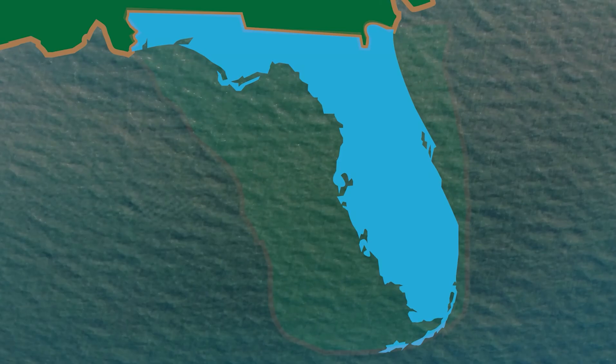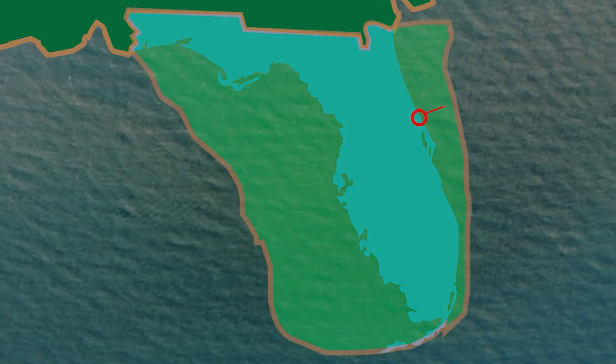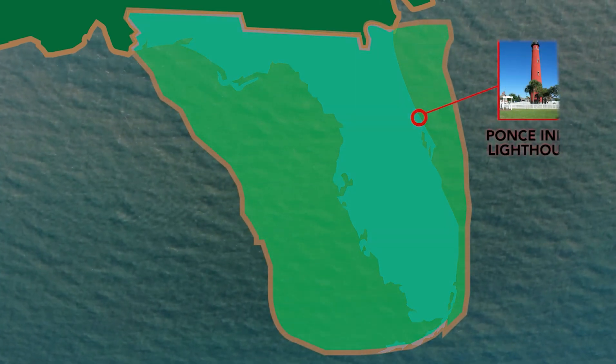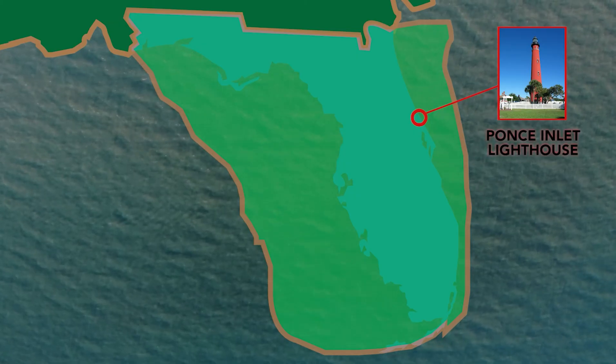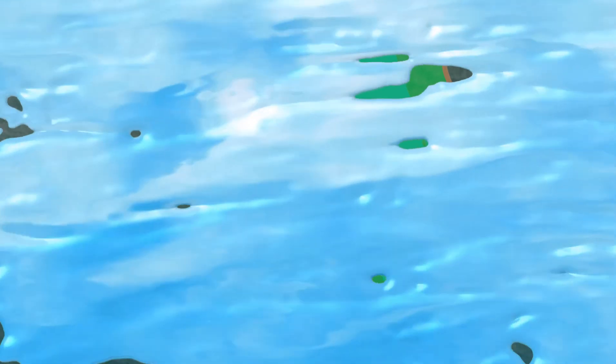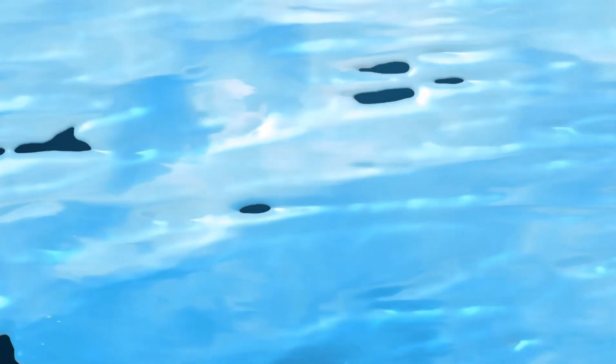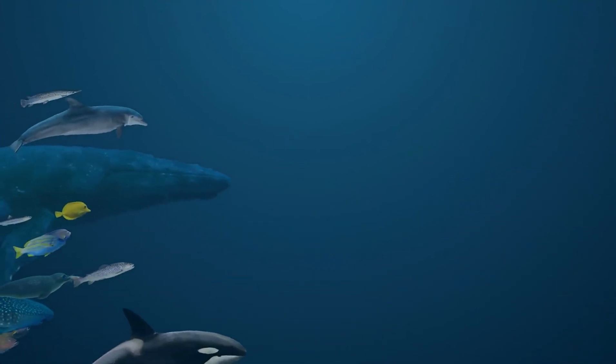During the last glacier period, about 20,000 years ago, the beach was 25 miles from the lighthouse in Ponce Inlet. Breaking waves and currents created the offshore habitats that fishes and invertebrates depend on today.